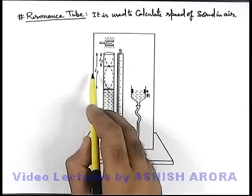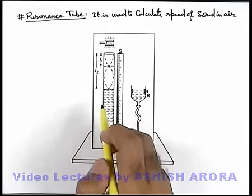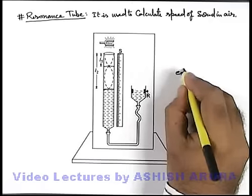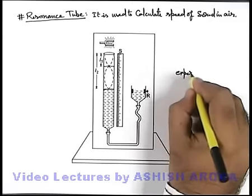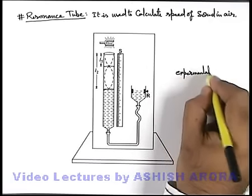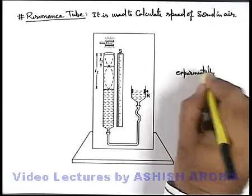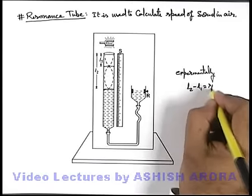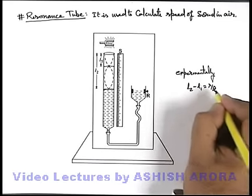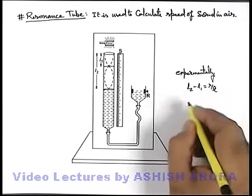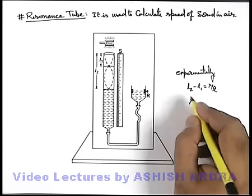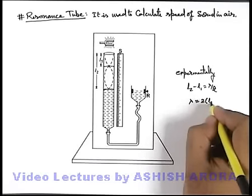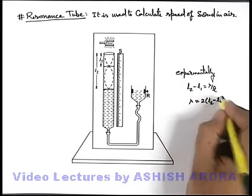So here we can say, if L2 is the next resonating length, then experimentally L2 minus L1 will be lambda by two. And in this situation, the wavelength lambda which we have experimentally calculated is twice of L2 minus L1.